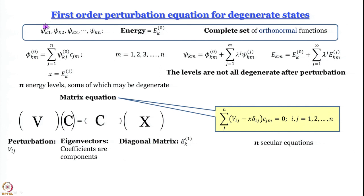For degenerate states where you have n number of wave functions associated with the same unperturbed energy, where the ψ denote a complete set of orthonormal functions, you cannot write the perturbed wave functions as ψ⁰ plus something. You cannot say that one particular wave function will contribute and the others will not.